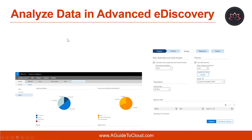Near-duplicate detection works as follows: consider a set of documents to be reviewed in which a subset is based on the same template and has mostly the same boilerplate language with a few differences. If a reviewer could identify this subset, they can review one of them thoroughly and review only the differences in the rest.